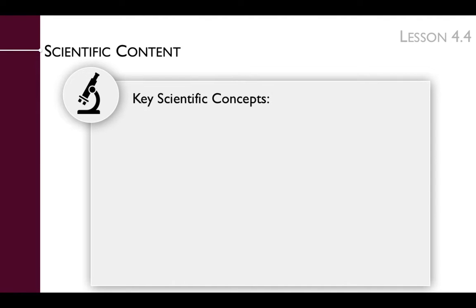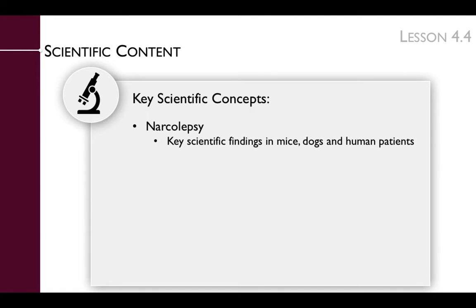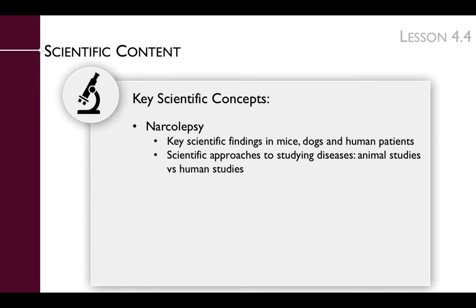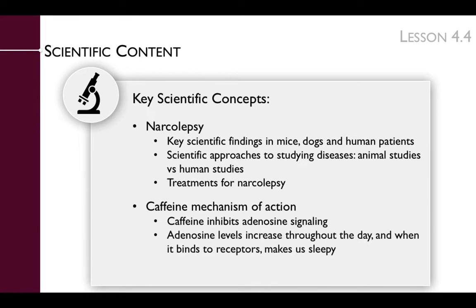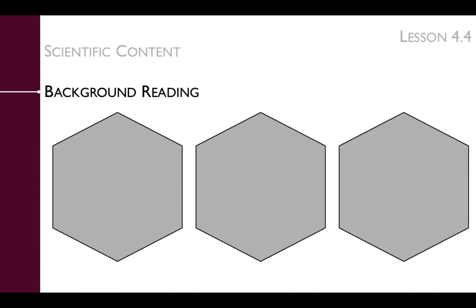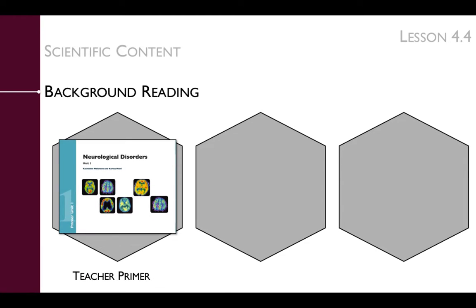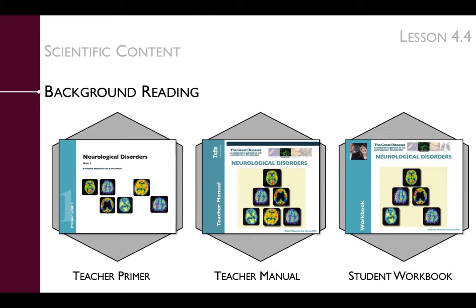To prepare for this lesson, you'll need to review the key scientific concepts that are presented in it. They include narcolepsy, key scientific findings in mice, dogs, and human patients, the scientific approaches to studying disease including animal studies versus human studies, and treatments for narcolepsy. We'll also discuss caffeine's mechanism of action, like caffeine inhibits adenosine signaling, and that adenosine levels increase throughout the day and when it binds to its receptors makes us sleepy. You can review the scientific content in the background material provided in the teacher primer, the teacher manual, and the student workbook.